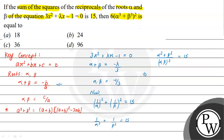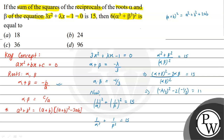Now, α² + β² = (α + β)² - 2αβ. Substituting, we get: [(α + β)² - 2αβ] / (αβ)² = 15. Plugging in α + β = -λ/3 and αβ = -1/3: [(-λ/3)² - 2(-1/3)] / (-1/3)² = 15, which gives [λ²/9 + 2/3] / (1/9) = 15.